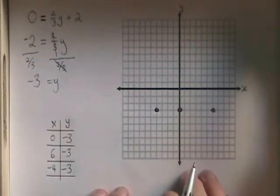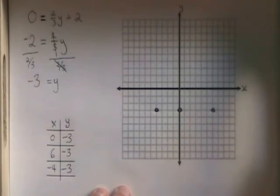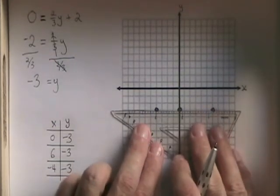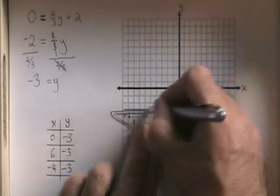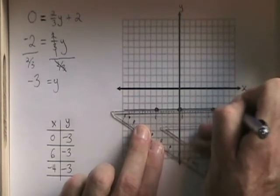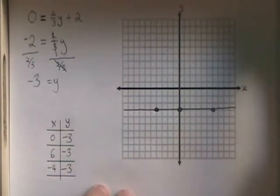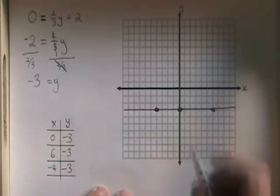We have a horizontal line with a slope of 0. I'm going to draw the line with a ruler all the way across the graph. And I'm going to label the three points that were in my table.